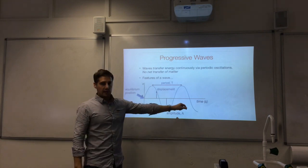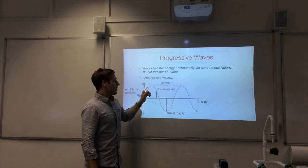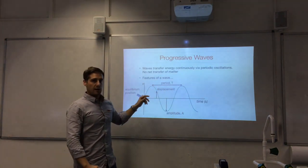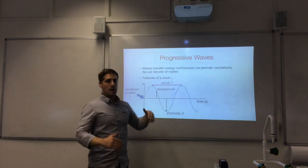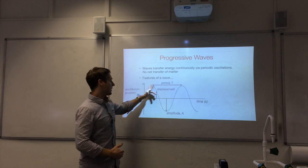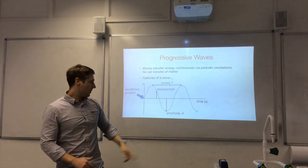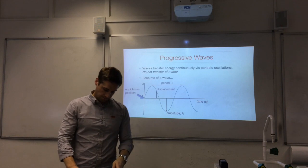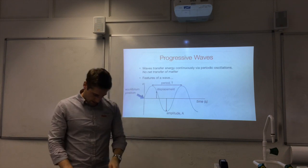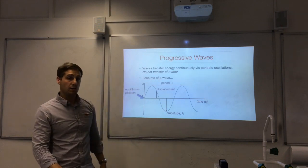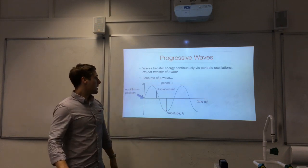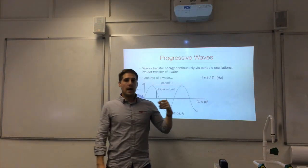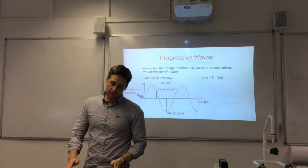If we change the axis to time, then this becomes the time period. These two points are in phase on the time axis, so the difference between the two times gives us the period. Frequency is related to the period — period is capital T, frequency is one over the time period, and the unit is Hertz.